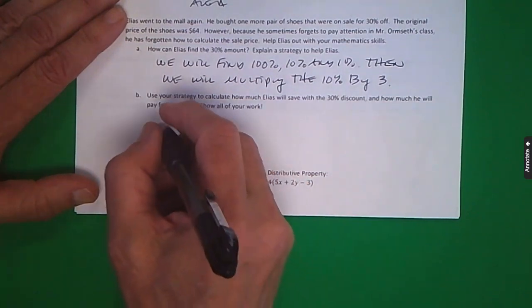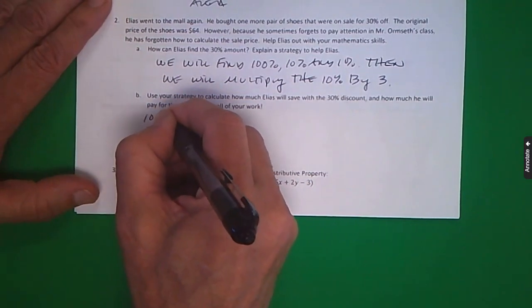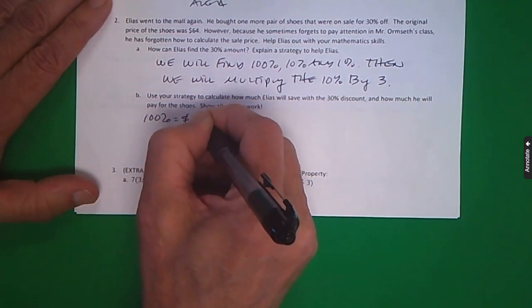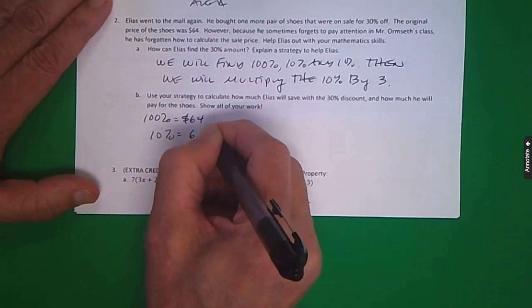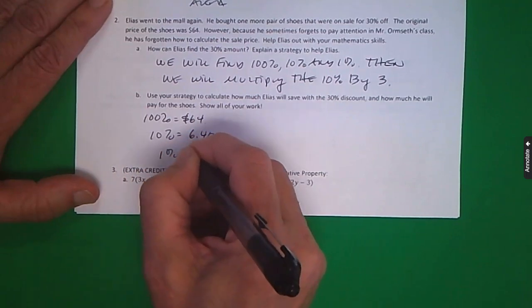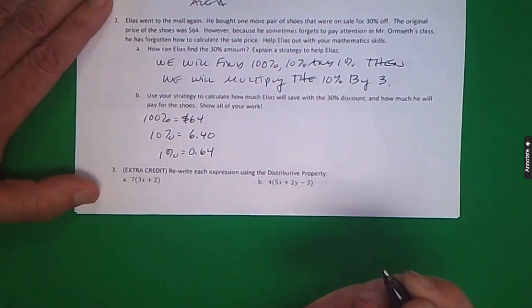Okay, so now to actually do that, 100% is $64, 10% is $6.40, 1% is $0.64.